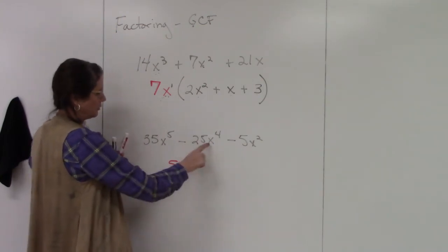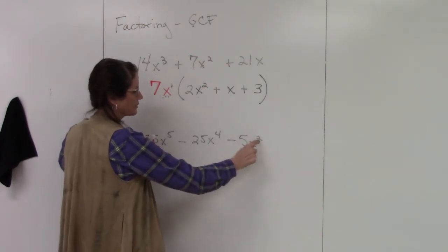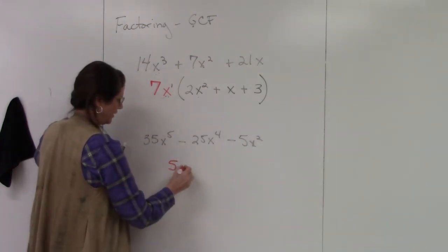Now I look at my exponents. I have x to the fifth, x to the fourth, x². I pick the smallest exponent. So x².